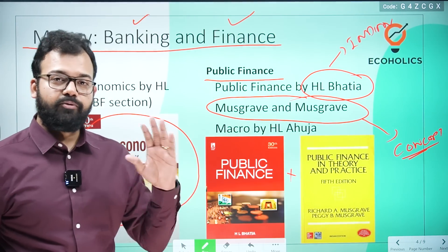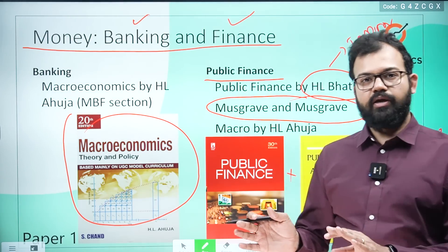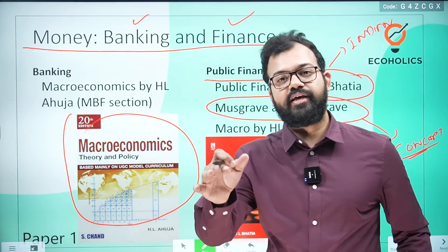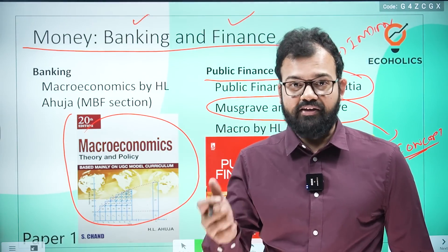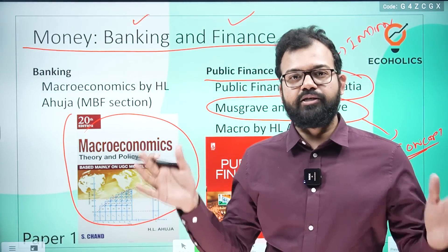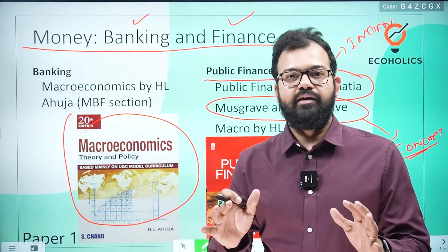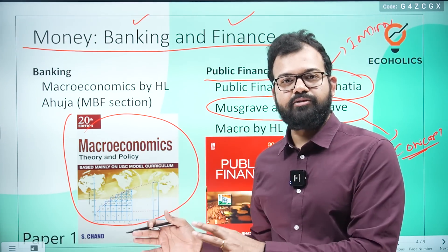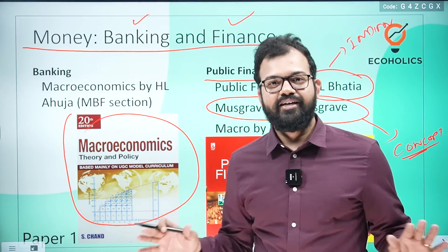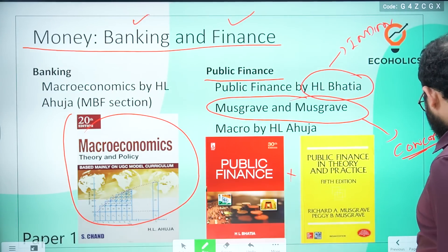Again, do not read these books cover to cover — read only selected portions. Your aim is to clear the exam, not to become a scholar. As we tell students in our economics optional live classes: your aim is to clear the exam. If you read the whole book you may become a scholar, but that won't clear the exam. Read selected portions. For any doubt, contact me on my WhatsApp number.